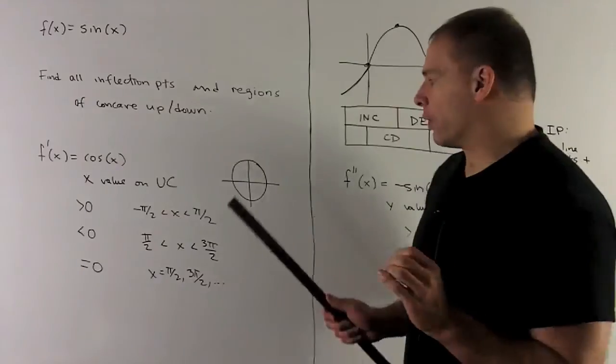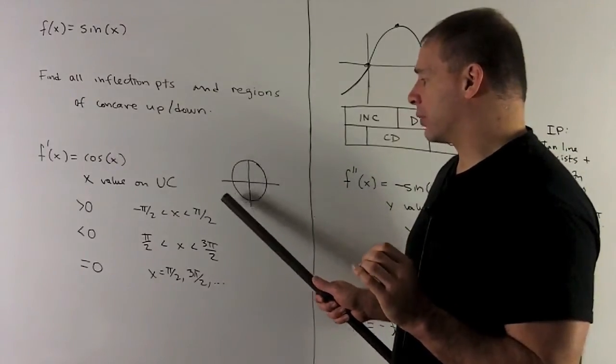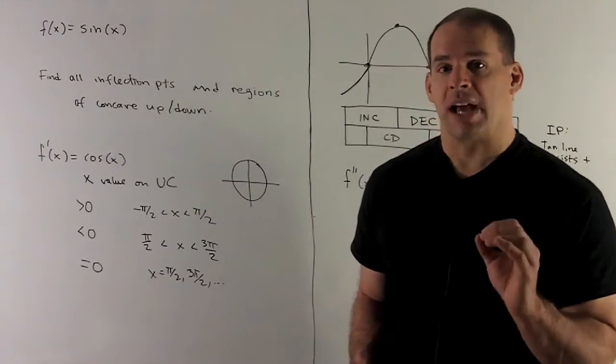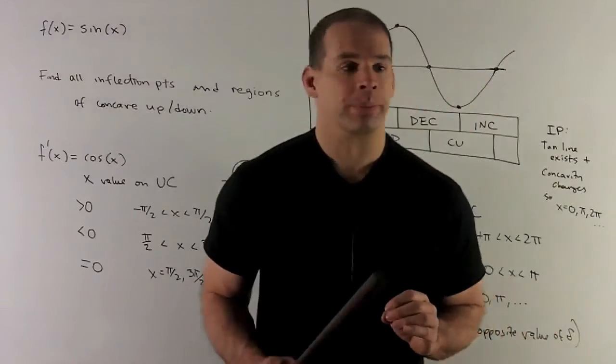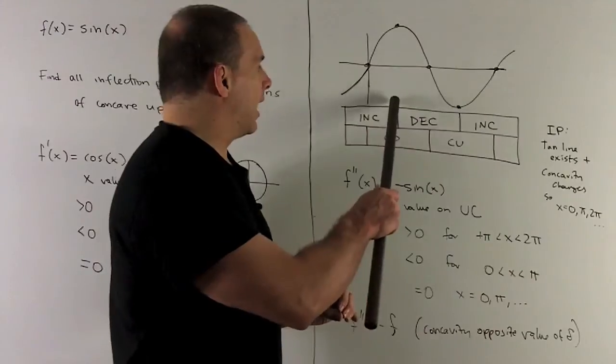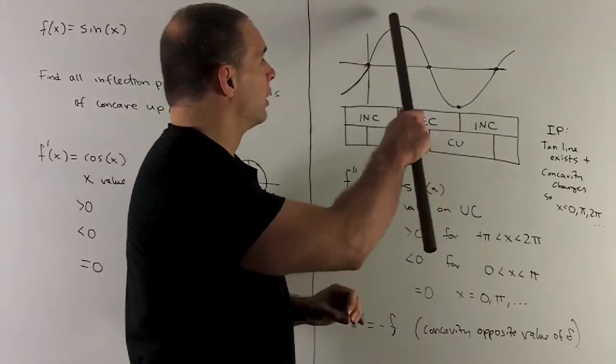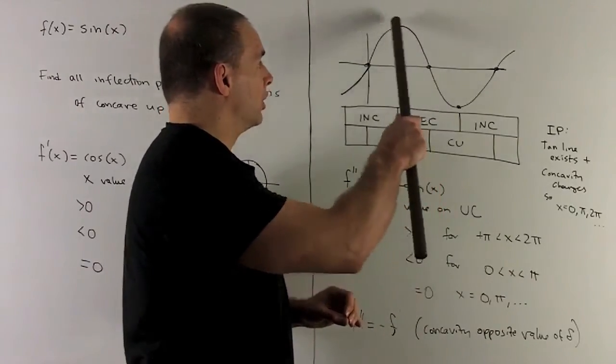Now, as I go from pi halves to 3 pi halves, our cosine is going to be negative, which means we're going to be decreasing on that region. So as I go from pi halves to 3 pi halves, we're definitely decreasing on the graph.